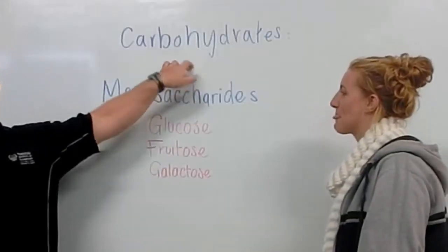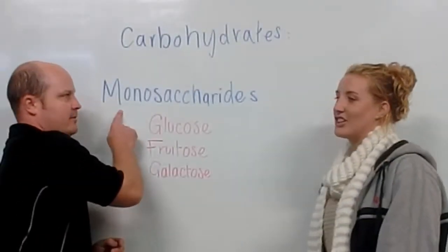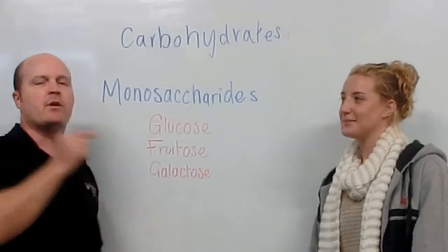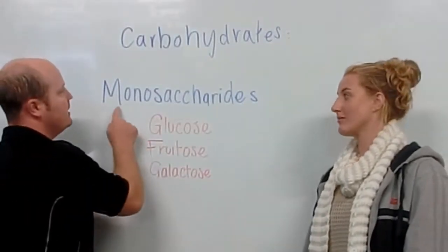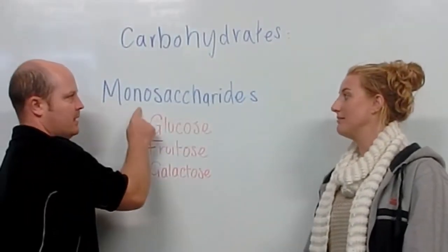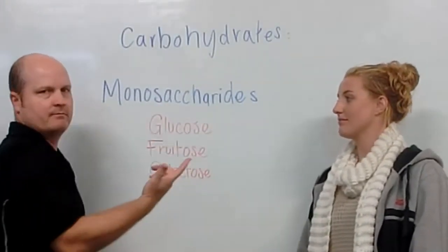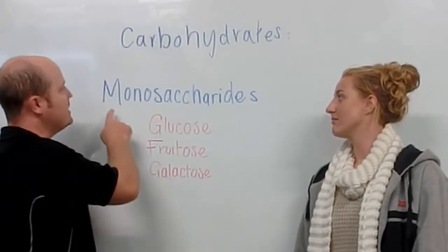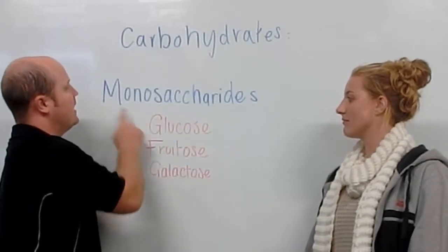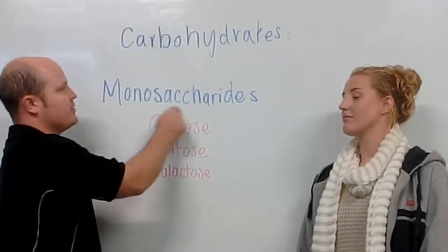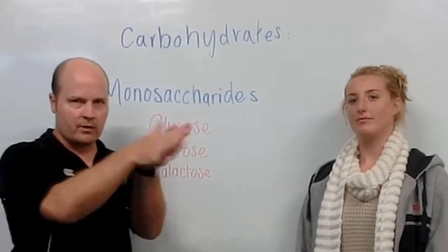The first form of carbohydrate we're going to talk about is monosaccharides. Mono means one, and saccharide means sugar. So these sugars are one sugar molecule, so they're going to break down really quickly.